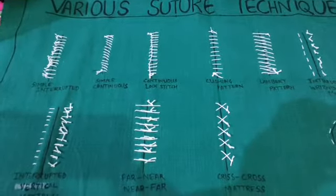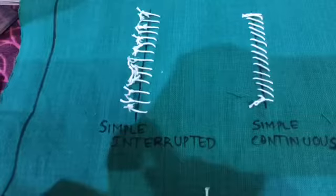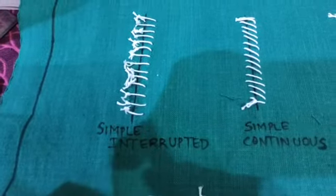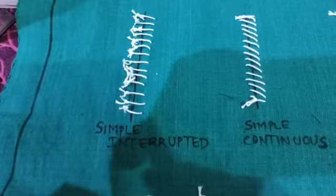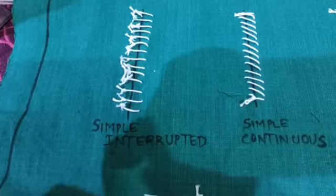These are some of the various suture techniques used in veterinary surgery. The first one is simple interrupted. It is used for the apposition of the wound of skin, esophagus, or muscle.